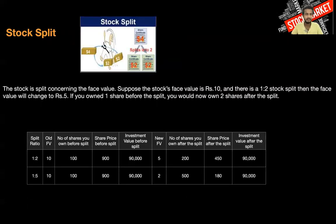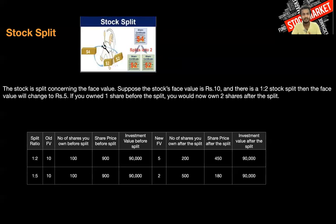Next is stock split, which is very similar to bonus, but in a bonus the face value remains the same, whereas in a stock split the face value changes. Suppose the face value of a stock is 10 rupees and there is a 1:2 stock split — then the face value would become 5 rupees. Similarly your number of stocks increases: if you have one share it would become two shares in a 1:2 split, meaning one share changes into two.